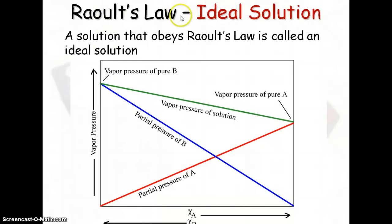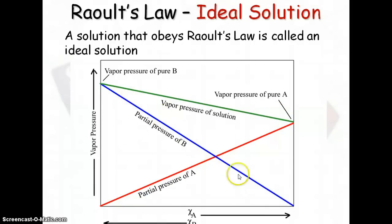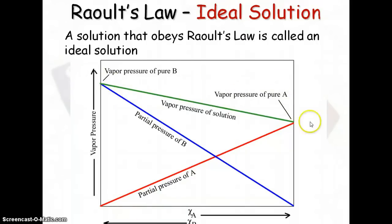When a solution obeys Raoult's Law, it's called an ideal solution — it behaves in an ideal manner that we can easily predict via our equation. As the partial pressure of B decreases, you have an increase in the mole fraction of A; and as the partial pressure of A decreases, you have an increase in the mole fraction of B, and the total vapor of pure A and pure B responds accordingly.